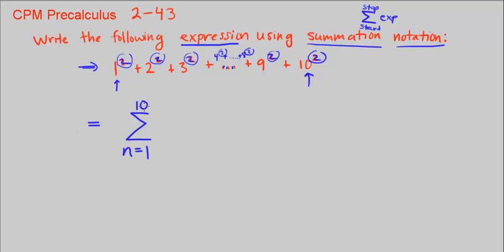So if N is equal to 1 and goes to 10, that's going to be the 1, 2, 3, 4, 5, 6, 7, 8, 9, 10.